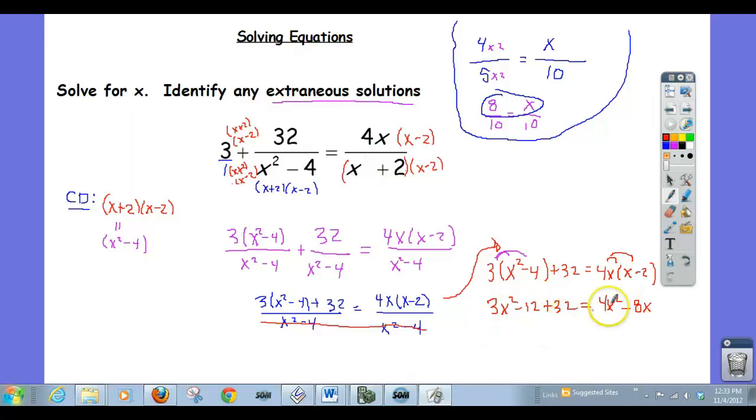And now we've got a quadratic over here, quadratic over here. Let's just get everything on one side. So I'm going to subtract 3x squared from both sides.